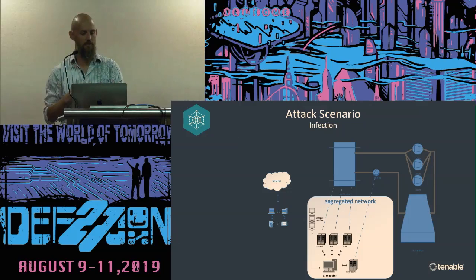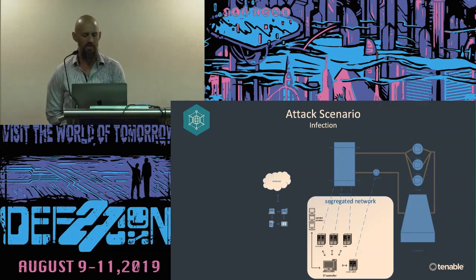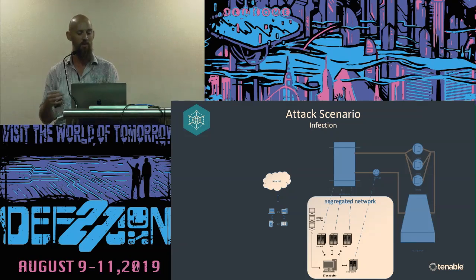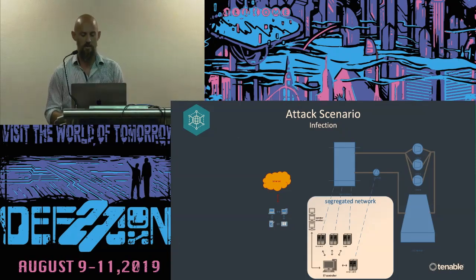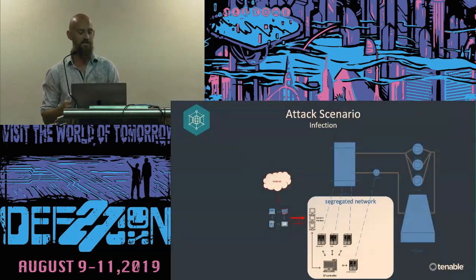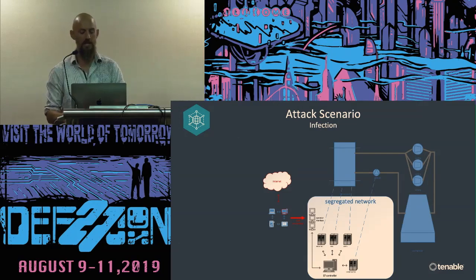For the attack scenario: the network is going to be an air-gapped network with all this critical, fragile equipment on it. We need some kind of initial infection into an adjacent network — could be a corporate or employee network, which is fairly trivial. Once we're in the adjacent network, some kind of human interaction or other propagation zero-day would allow us into the control network. We've seen this before — Stuxnet used a Windows volume over USB to jump the gap, and there are other examples in malware like Triton.